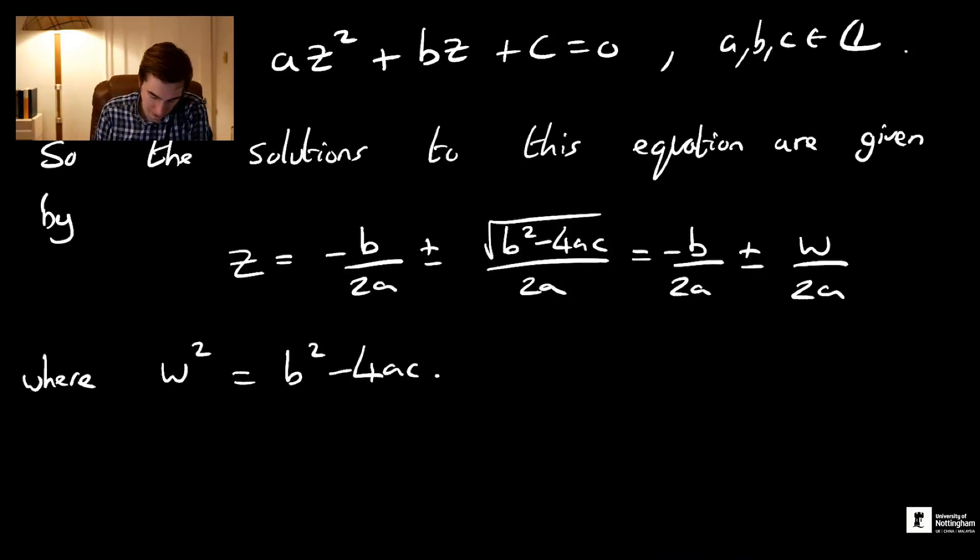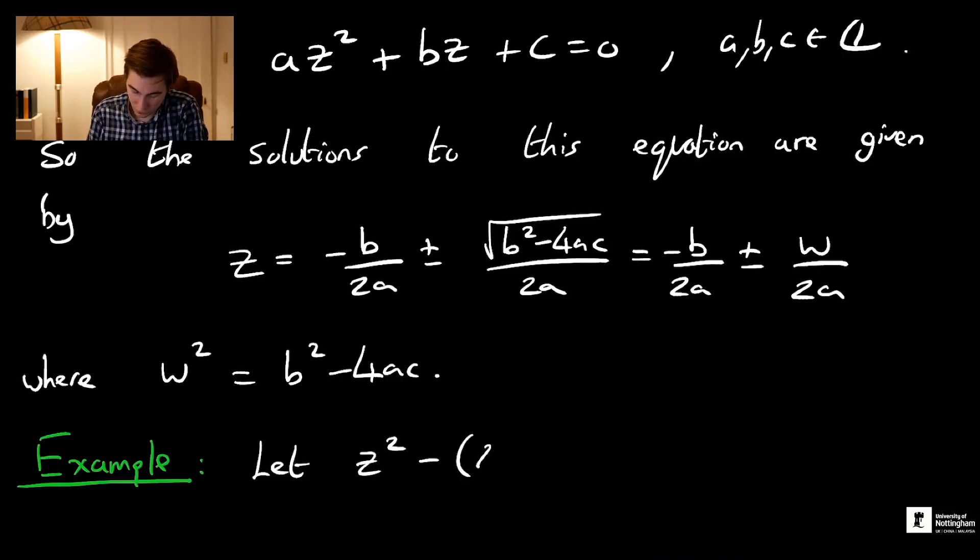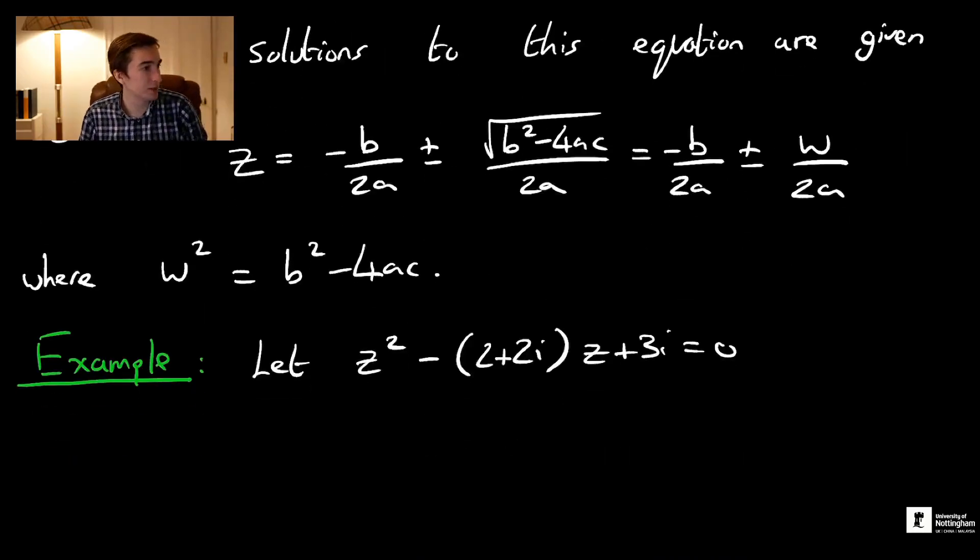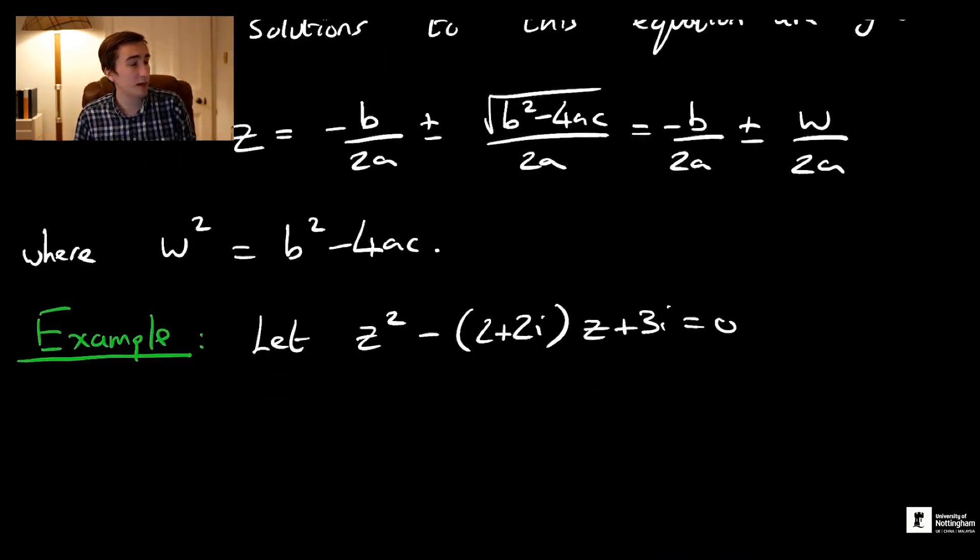We're going to take the example: let z² - (2+2i)z + 3i = 0. What we'll do is start by writing out what w² is. We'll find w and then substitute it into our formula. Once we know what w is, we're pretty much done.